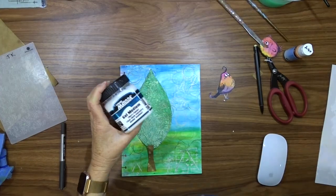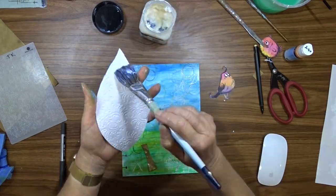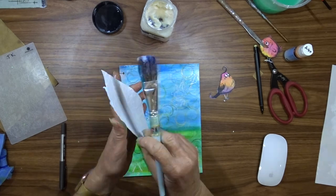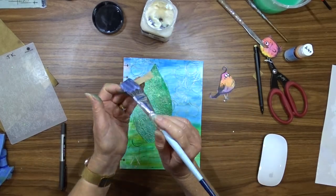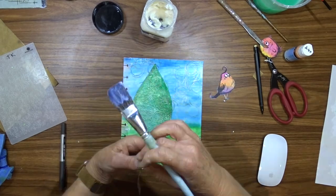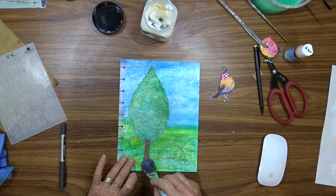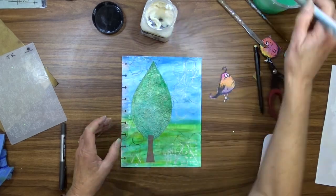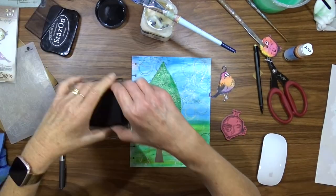I'm going to use this Matisse gel medium in matte to attach my tree and my trunk to the page. I'm careful not to get the matte medium onto the background because I have not sealed it at this stage and being gelatos they're water reactive, so if I did get them wet they would move. So I try not to get any of the matte medium on the background.